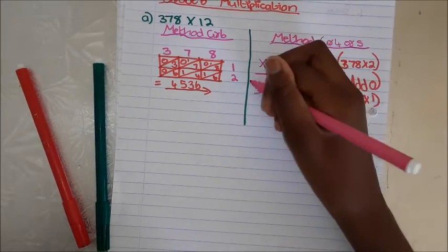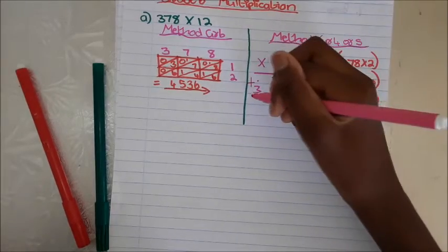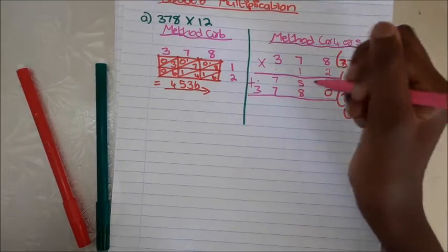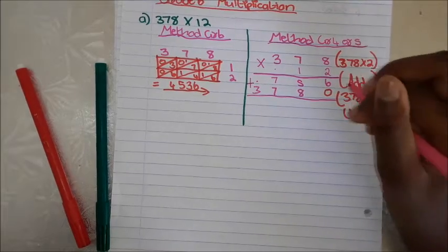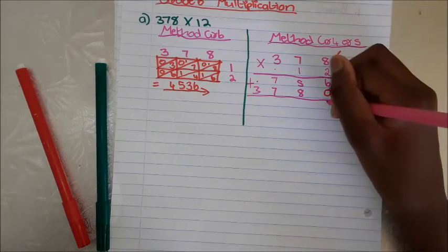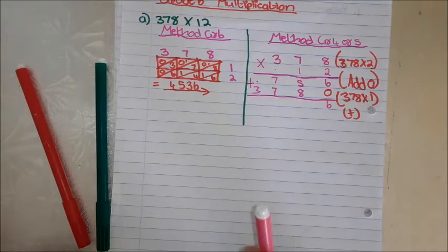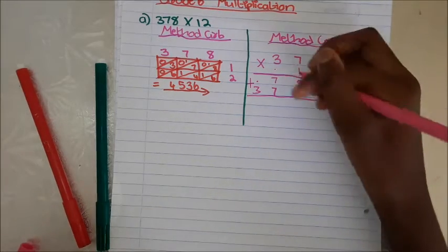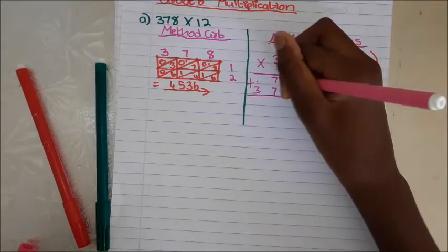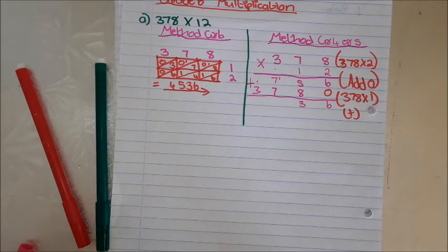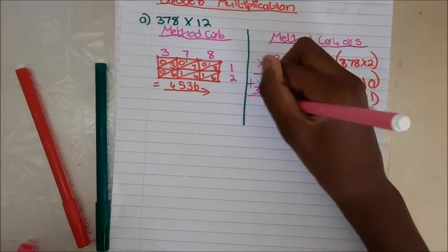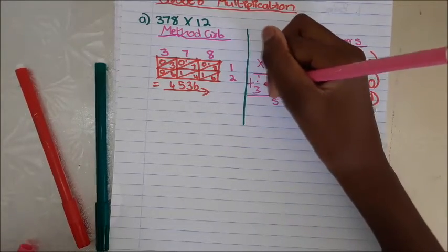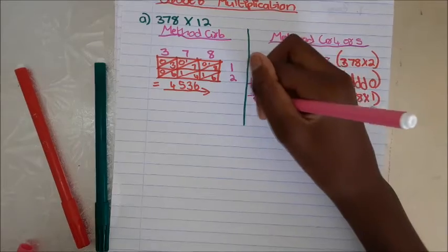Put the line on top, then a plus. Now we calculate. It's 6 here. 8 plus 5 is 13 — I was right, it's 13. Put the 1 on top. 7 plus 7 is 14, plus 1 is 15. Then 3 plus 1 is 4.